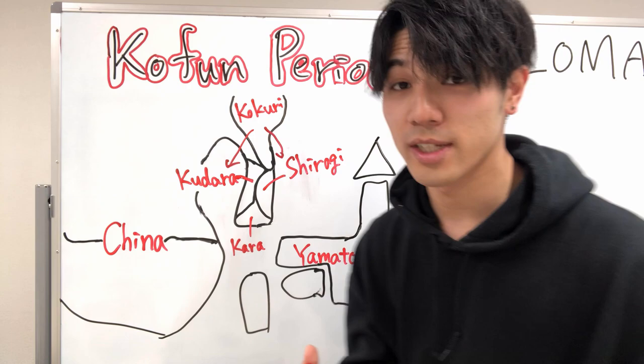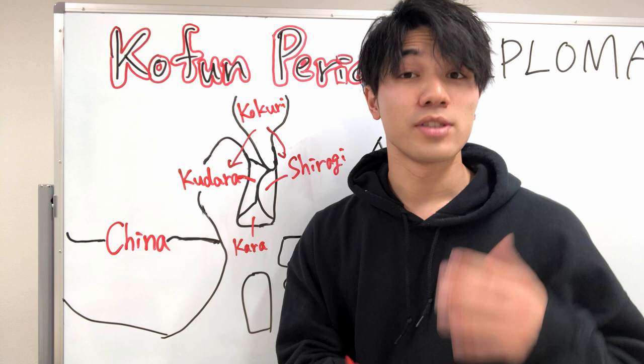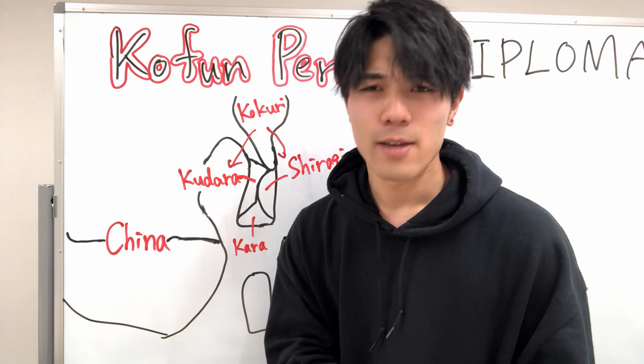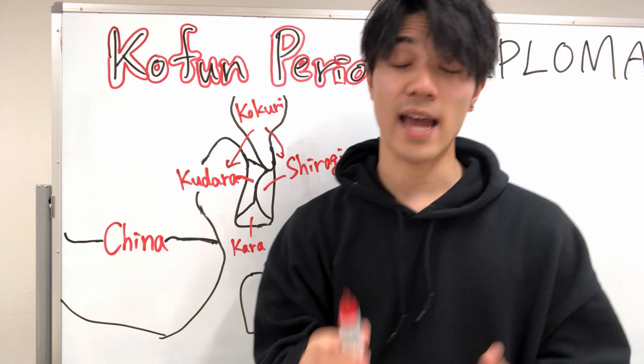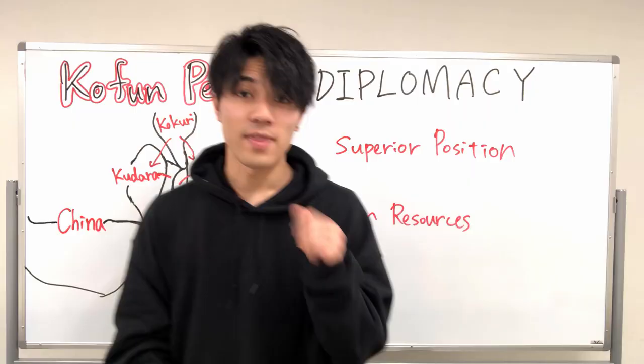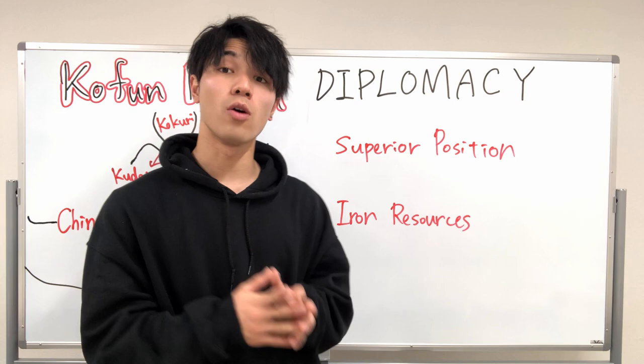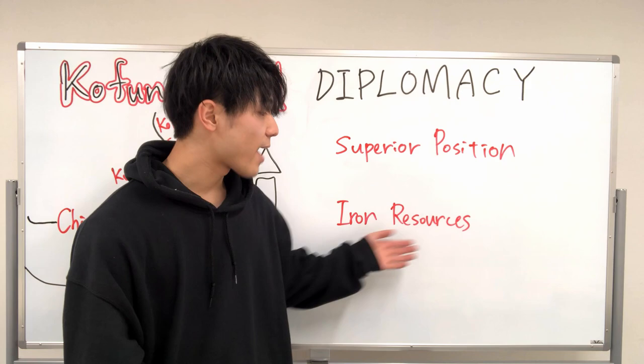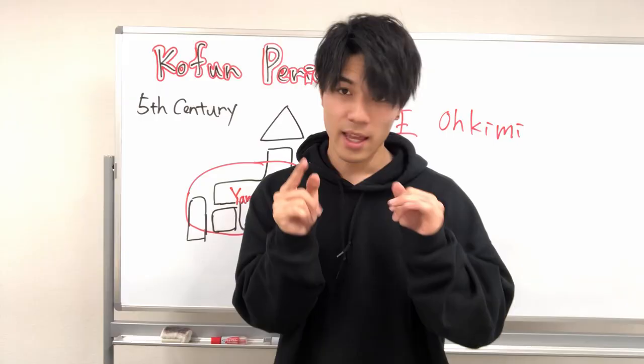During this time, China had the biggest power in East Asia, which means it was very important for kings in Japan to be authorized by China. In fact, according to Chinese records, five kings in Japan brought tributes to China. This implies that the kings of the Yamato Administration intended to hold a superior position over Korean countries and to secure iron resources by taking advantage of authorization by China.